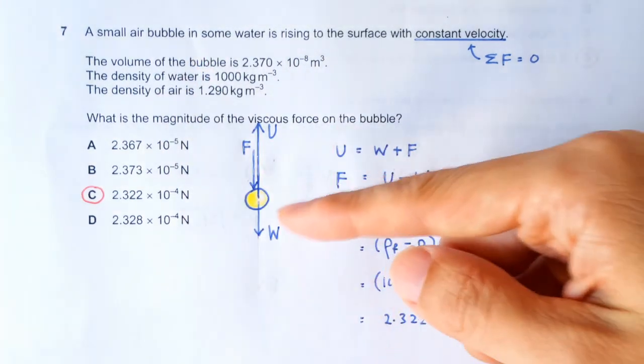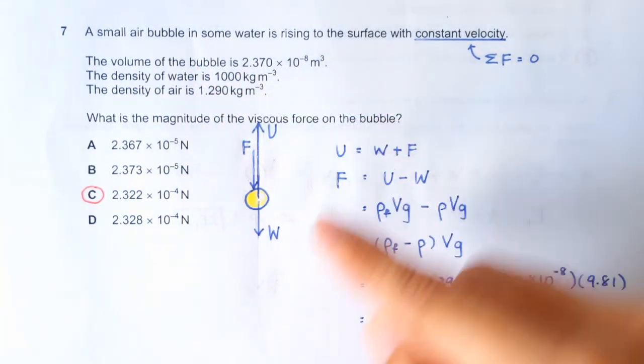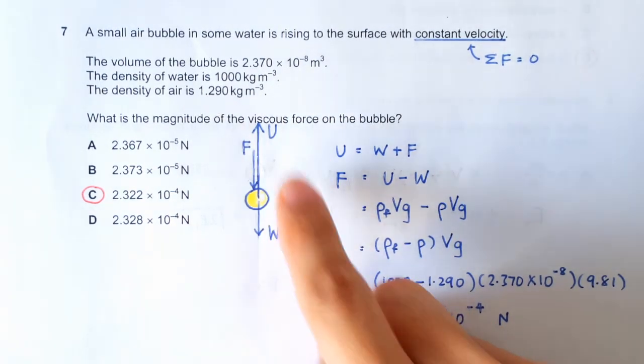Now, because the air bubble is rising, so it's travelling upward, the viscous force has got to be downward. So these are the three forces.